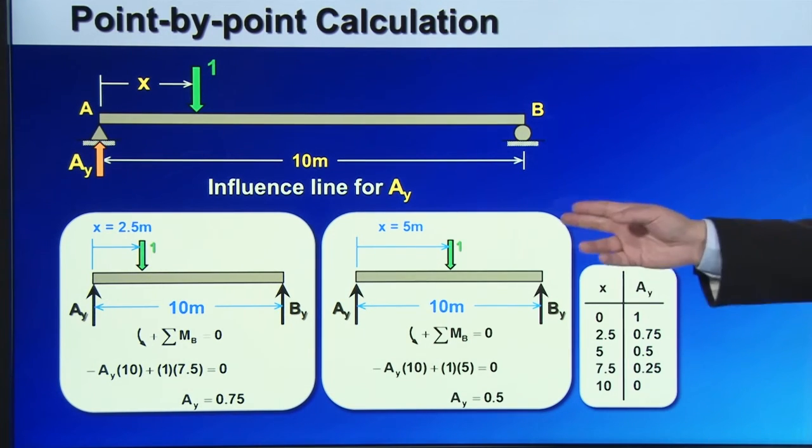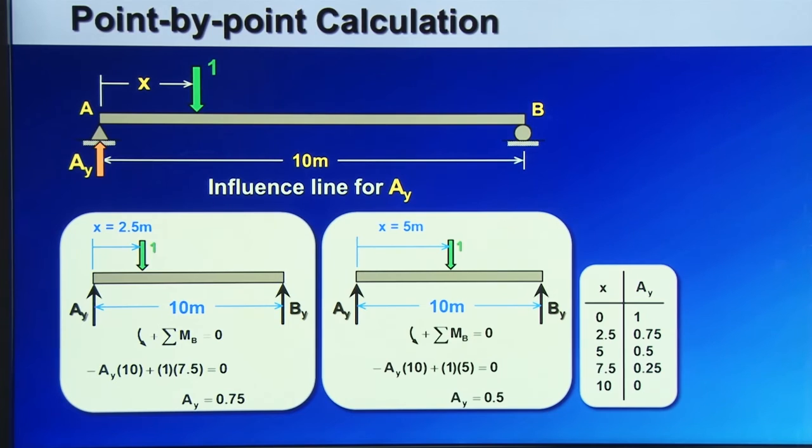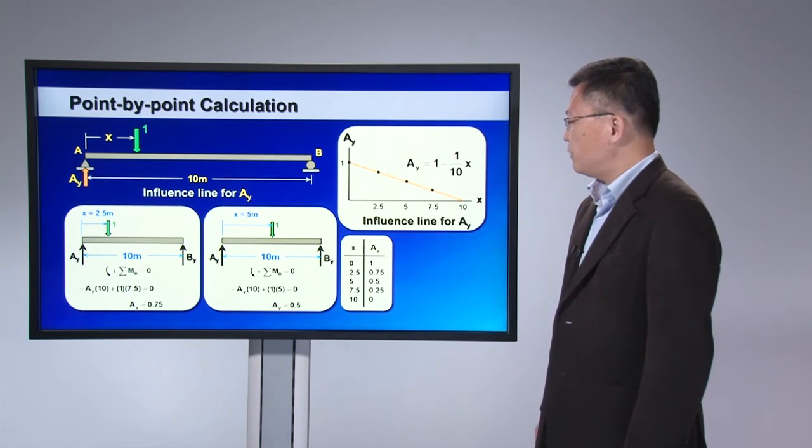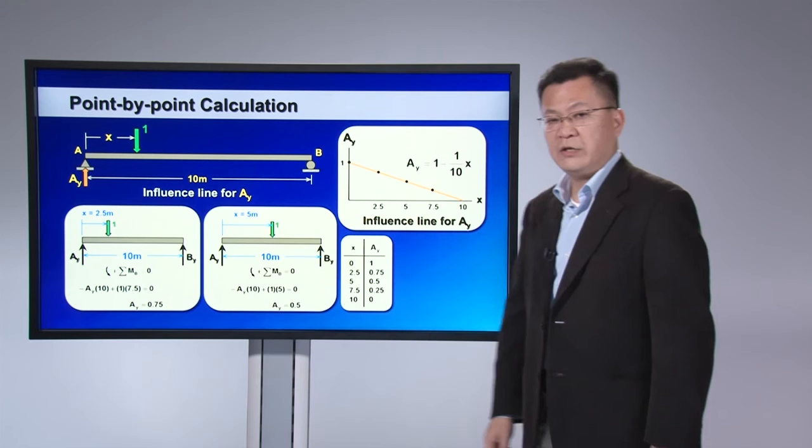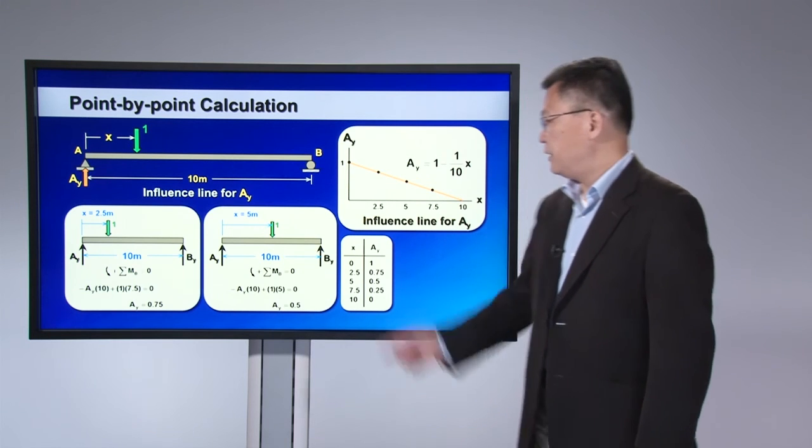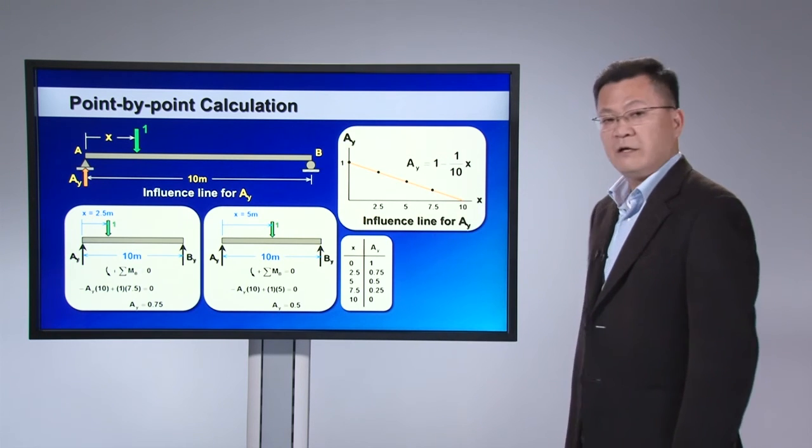So you can repeat the calculation for different locations, and then calculate the magnitude of Ay, and then plot them out on Ay versus the locations of the downward unit force, and here you have the influence line for Ay.